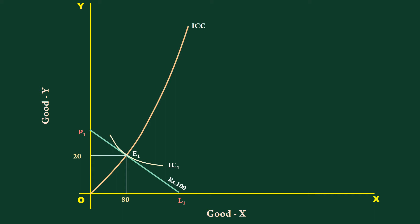Price of the two goods remaining constant, his income increases to 120 rupees. He moves to point E2. This is his new equilibrium point.